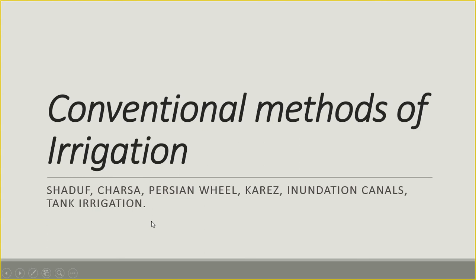Today we will be studying about the conventional methods of irrigation. By the word conventional, we mean old methods or methods that have now become outdated. These include Shadav, Charsa, Persian wheel, Karez, inundation canals, and tank irrigation.